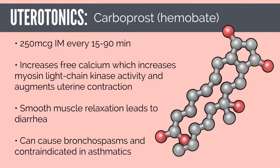Carboprost, or Hemabate, is a third highly effective uterotonic often used if methylergonovine is contraindicated. It is an analog of 15-methyl prostaglandin F2-alpha. The 250-microgram dose is administered intramuscularly and can be repeated every 15 to 90 minutes with a maximum of 8 doses. Prostaglandins increase myometrial intracellular free calcium, leading to increased myosin light chain kinase activity and augmented contractile response. The two most common side effects are diarrhea and bronchospasm, making it contraindicated in asthmatic patients.